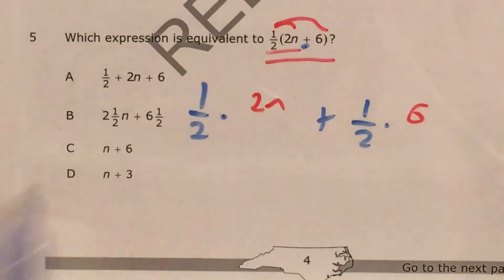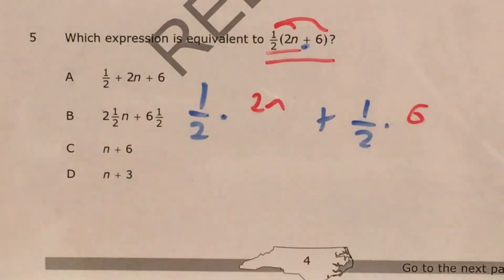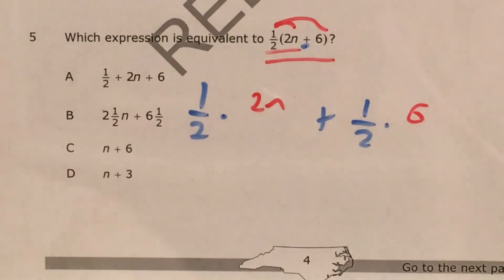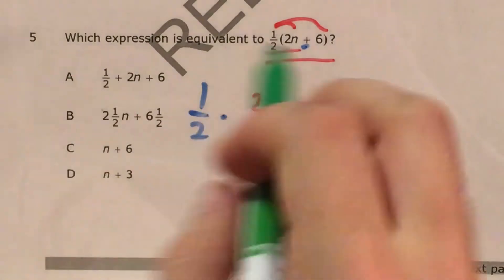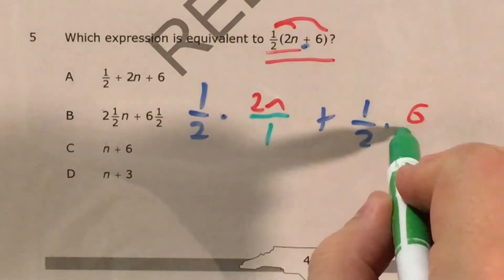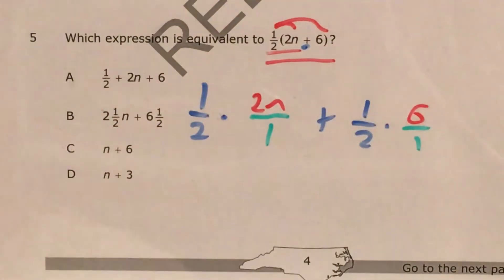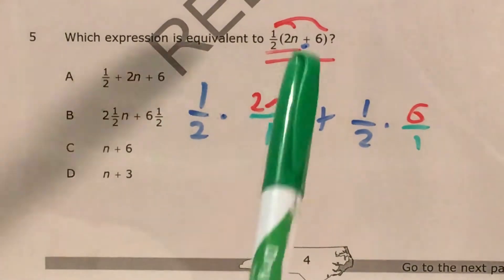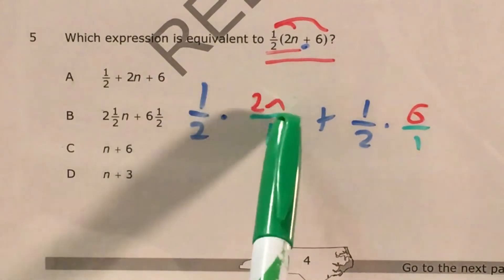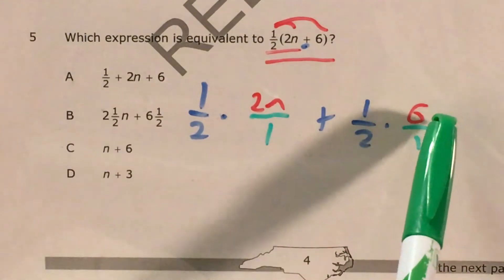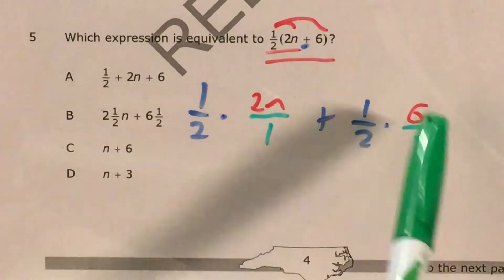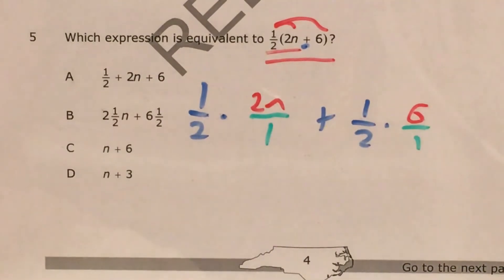And you might be wondering, why has Mr. W written it so small here? Well the reason is, because when I go ahead and multiply these, I'm actually going to start by saying that both of these are over 1. So whatever 2n is, it's the same thing as 2n divided by 1. 6, we can think of as 6 wholes, or 6 ones.